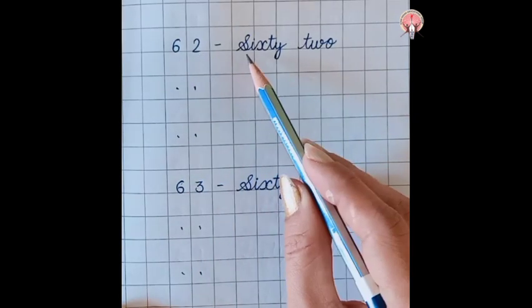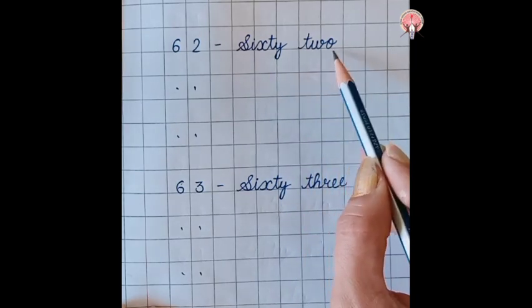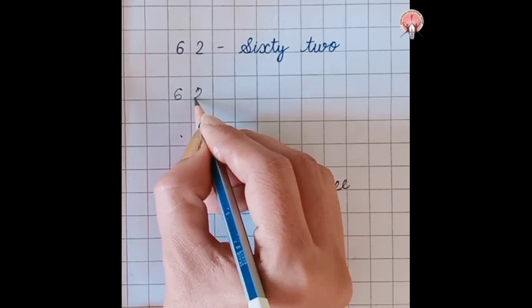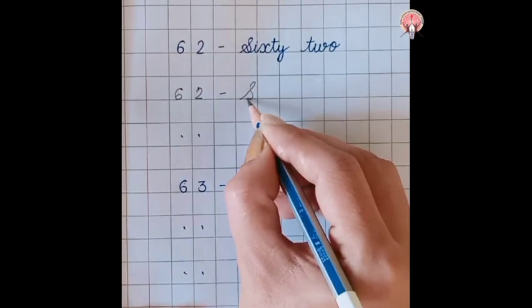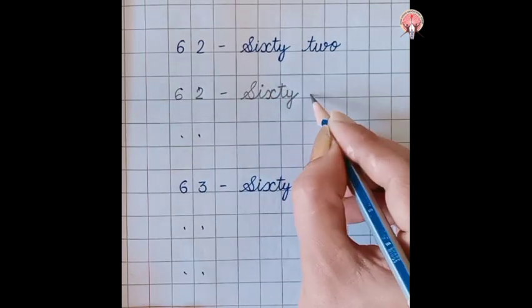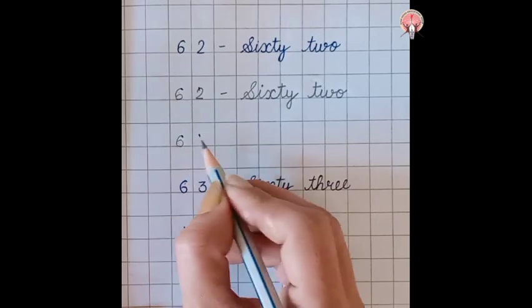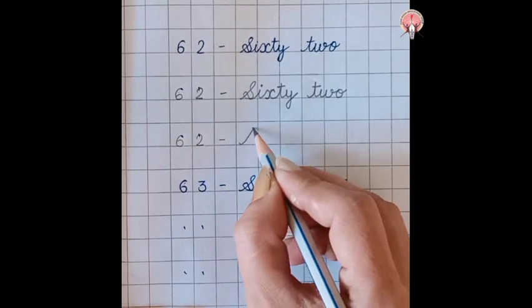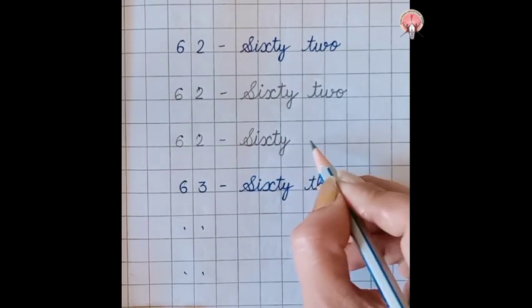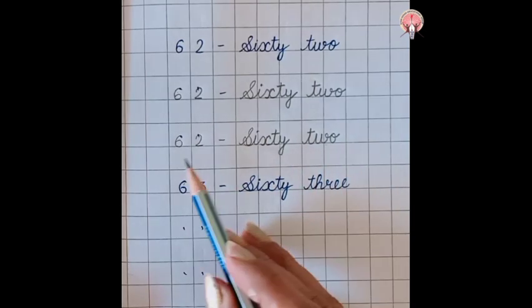62. S-I-X-T-Y T-W-O. 62. What comes after 62?